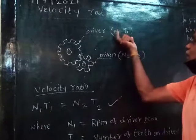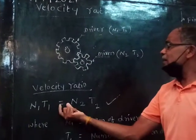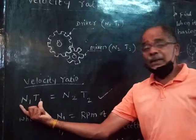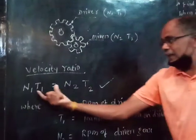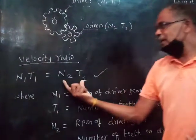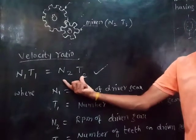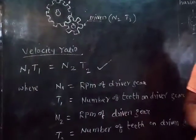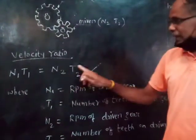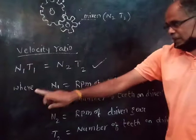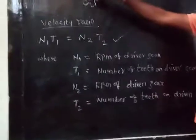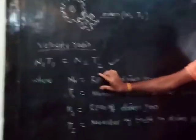The equation is: N1 times T1 equals N2 times T2. This is the speed ratio equation. Where N1 equals the RPM of the driver gear. RPM means revolutions per minute.